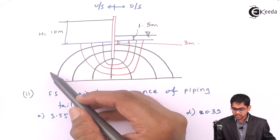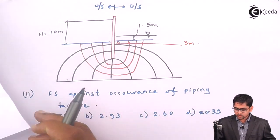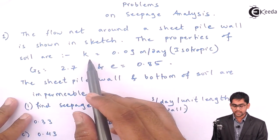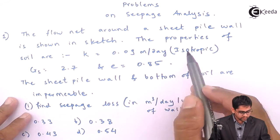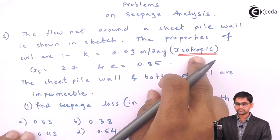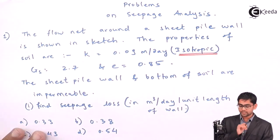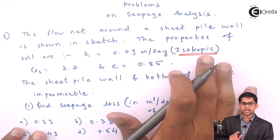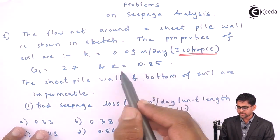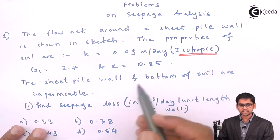These are the equipotential lines and these are the flow lines. The properties of the soil are given: coefficient of permeability k = 0.09. Very important, it is mentioned isotropic. If it is not isotropic, KZ is different, KX is different and you need to take equivalent permeability. GS value is given 2.7, void ratio e is given 0.85. The sheet pile wall and the bottom of the soil are impermeable.